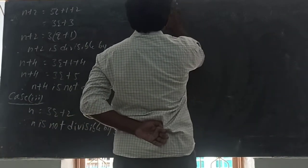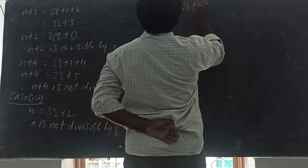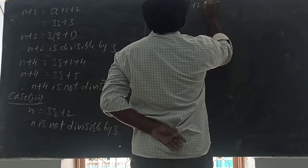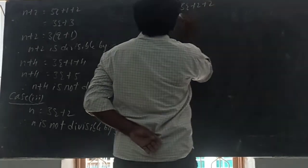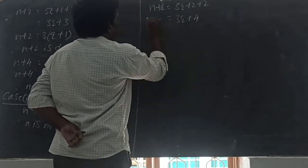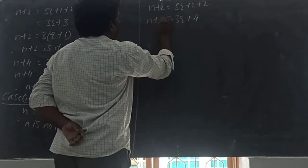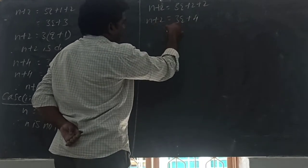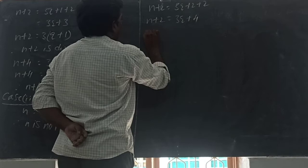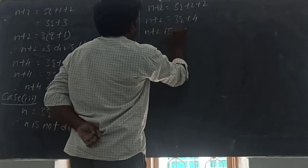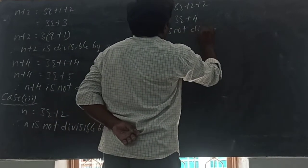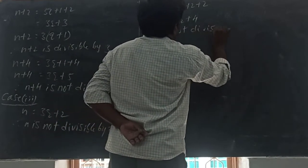Next, N plus 2: that is 3Q plus 2 plus 2, that is 3Q plus 4. So when N plus 2 is divided by 3, the remainder is 4. So therefore N plus 2 is not divisible by 3.